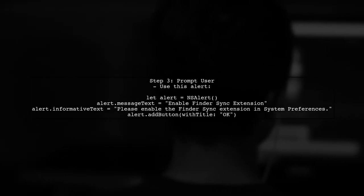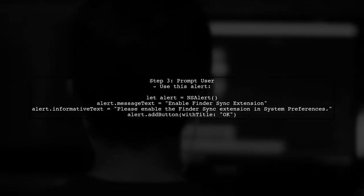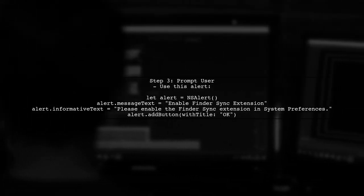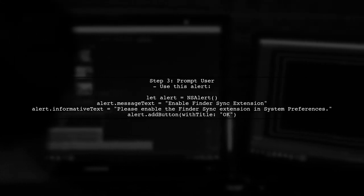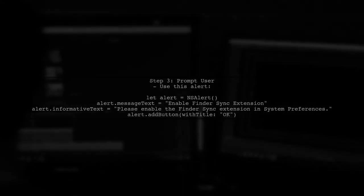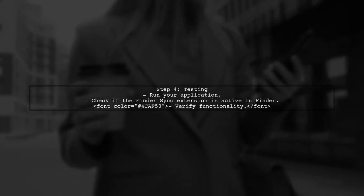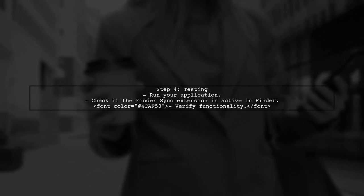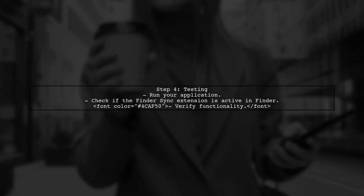If the extension is not enabled, you can prompt the user to enable it by directing them to the system preferences. Finally, make sure to test your application thoroughly to confirm that the Finder Sync extension launches as expected when the main app starts.